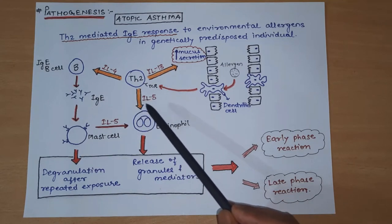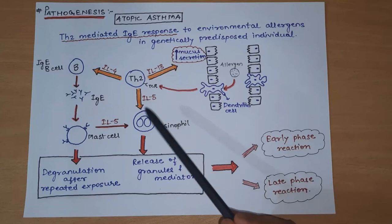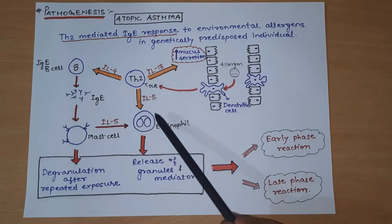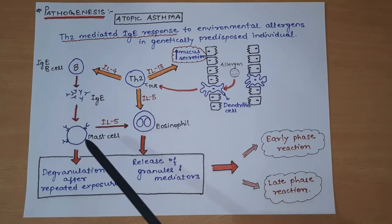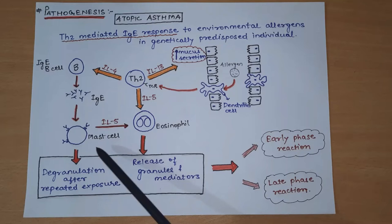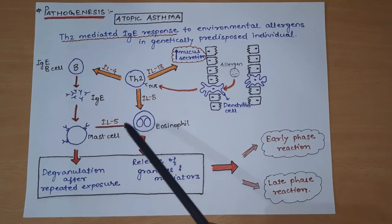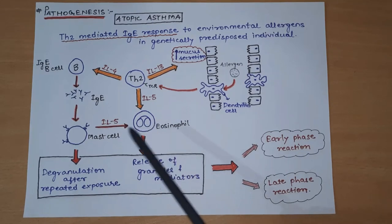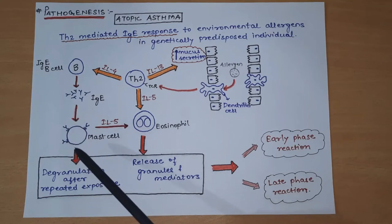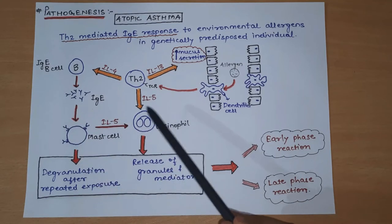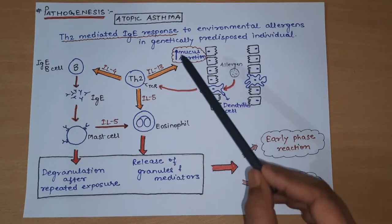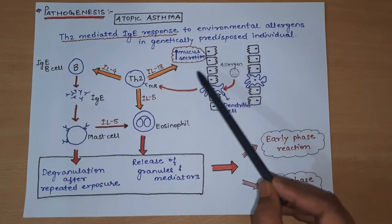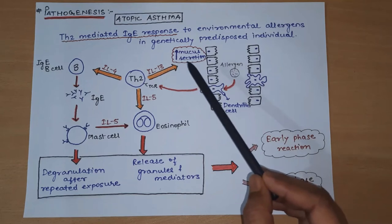Interleukin-5 released from TH2 cells directly stimulates eosinophils. The mast cell also releases IL-5, which stimulates eosinophils. So ultimately, mast cells are stimulated, eosinophils are stimulated, and mucous secretion is increased by the goblet cells.